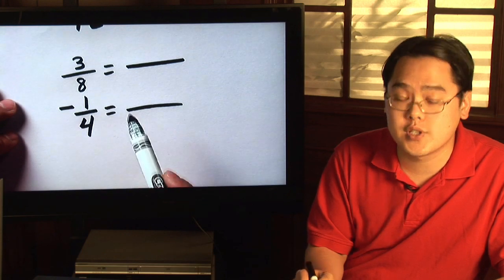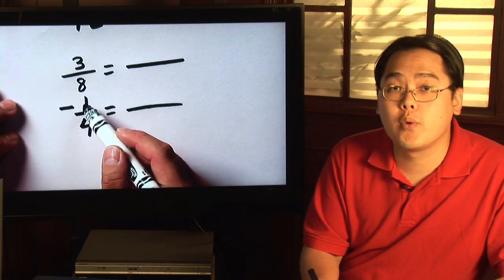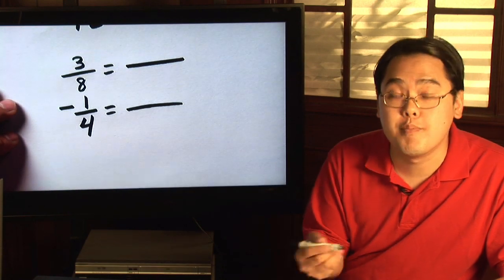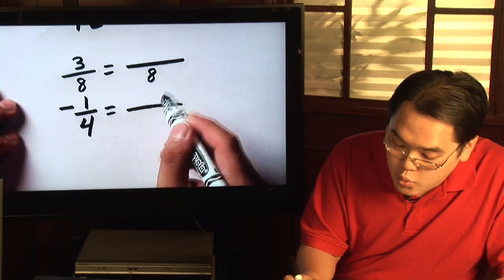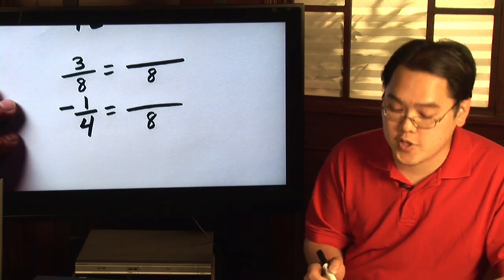Well, it just so happens that 8 and 4 will both go into the number 8. So, being that's the least common denominator, you write 8 for both fractions and you're about to change them.